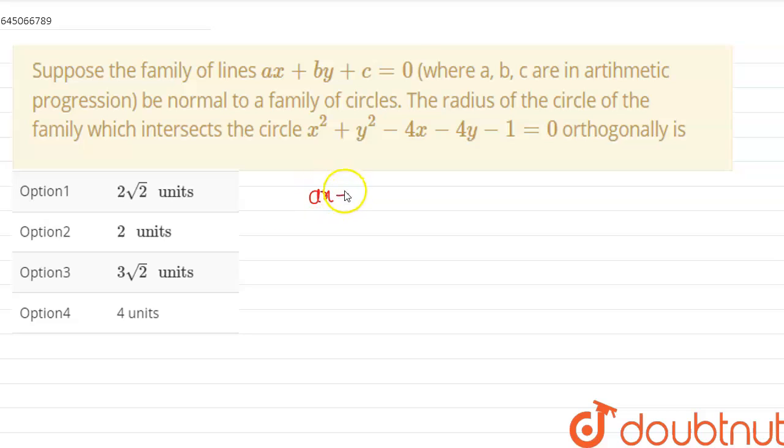So we are given a family of lines ax plus by plus c equal to 0 where a, b, c are in AP that means 2b is equal to a plus c. This is the condition for three terms to be in AP. So this can be written as a minus 2b plus c equal to 0. This is similar to this equation. This means that this always passes through a point.